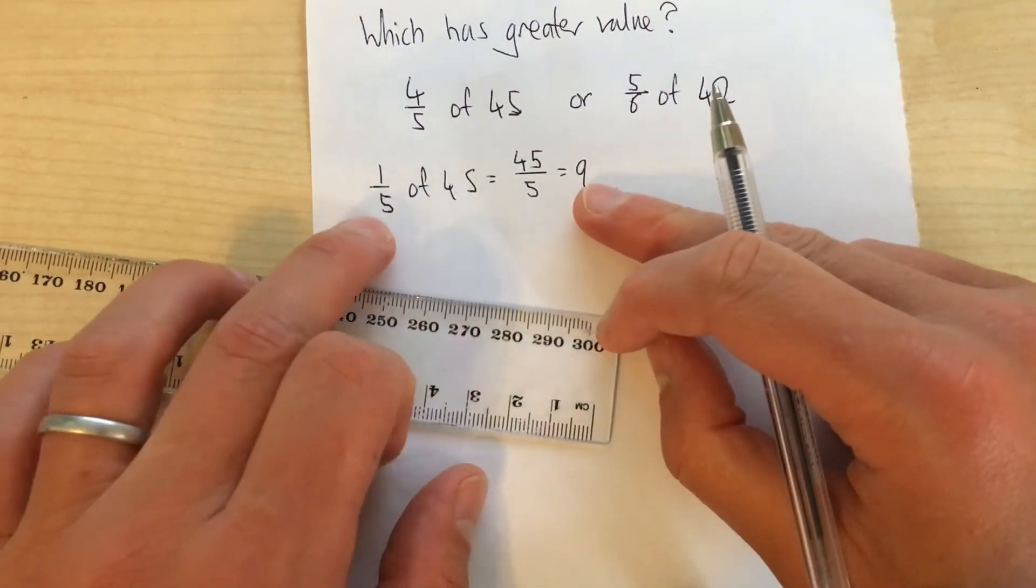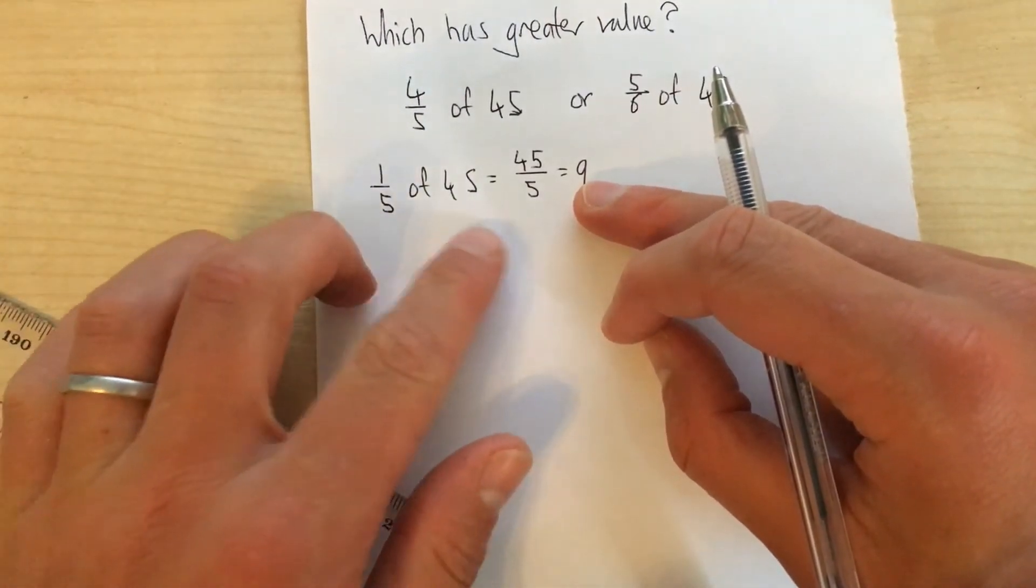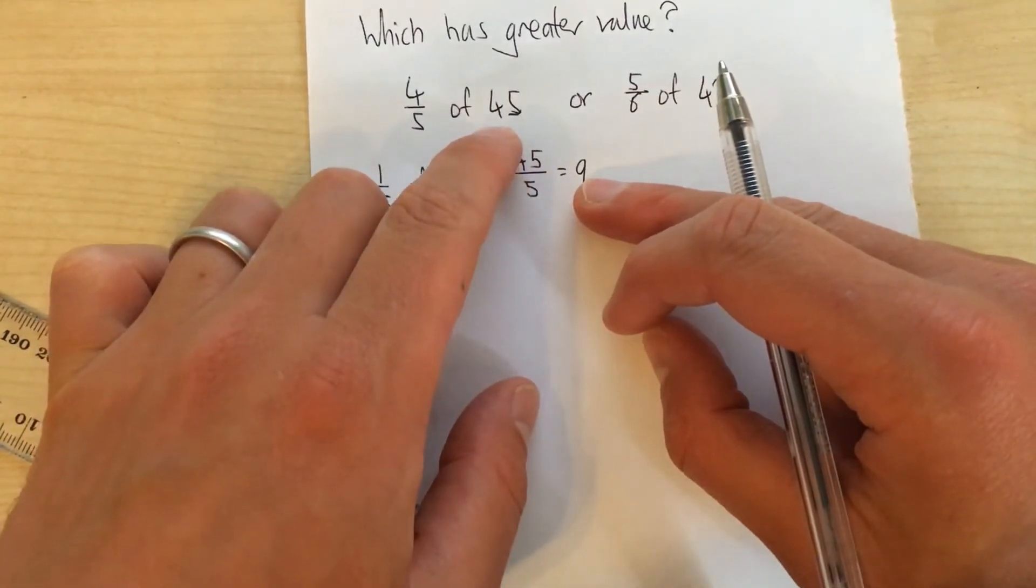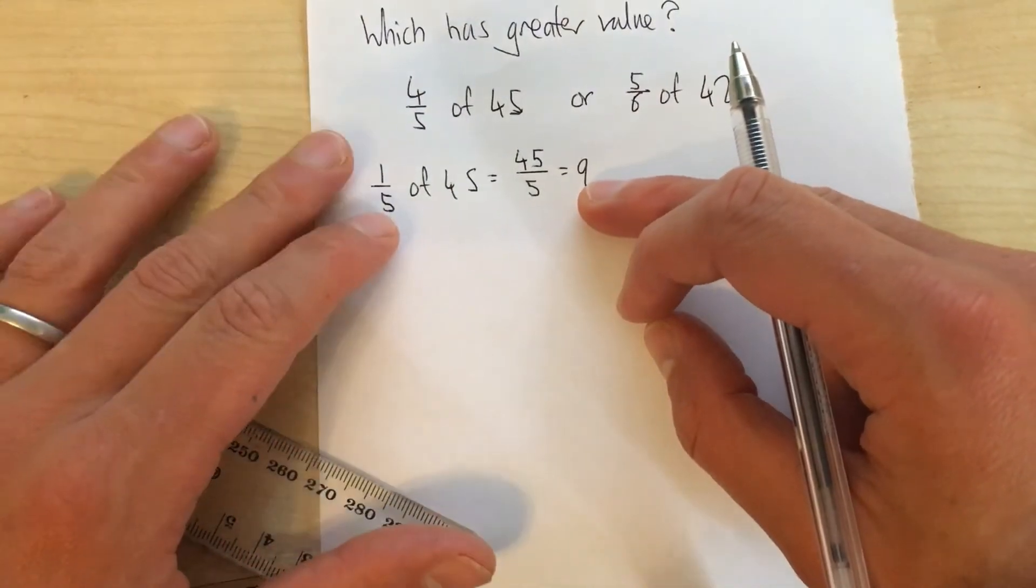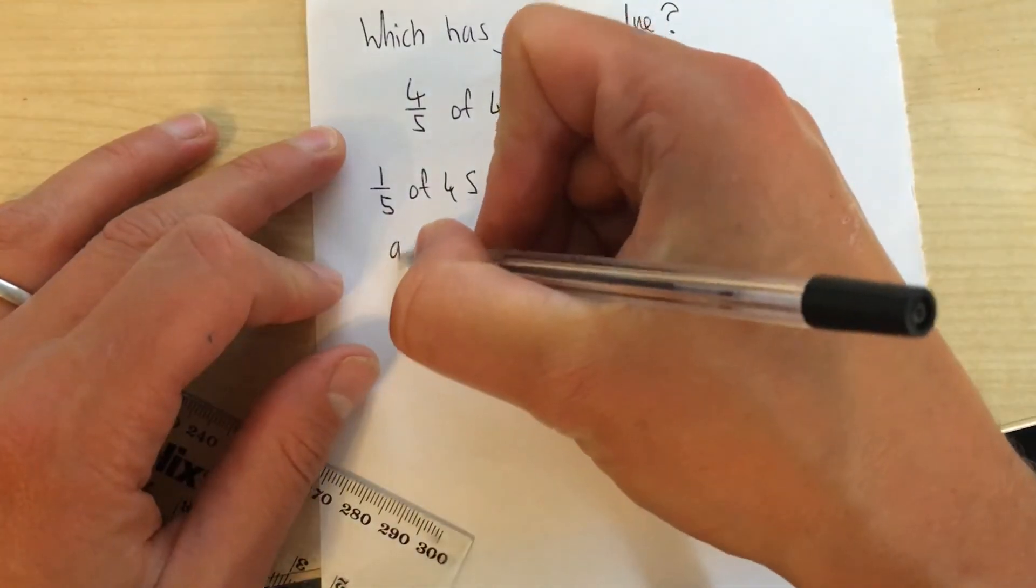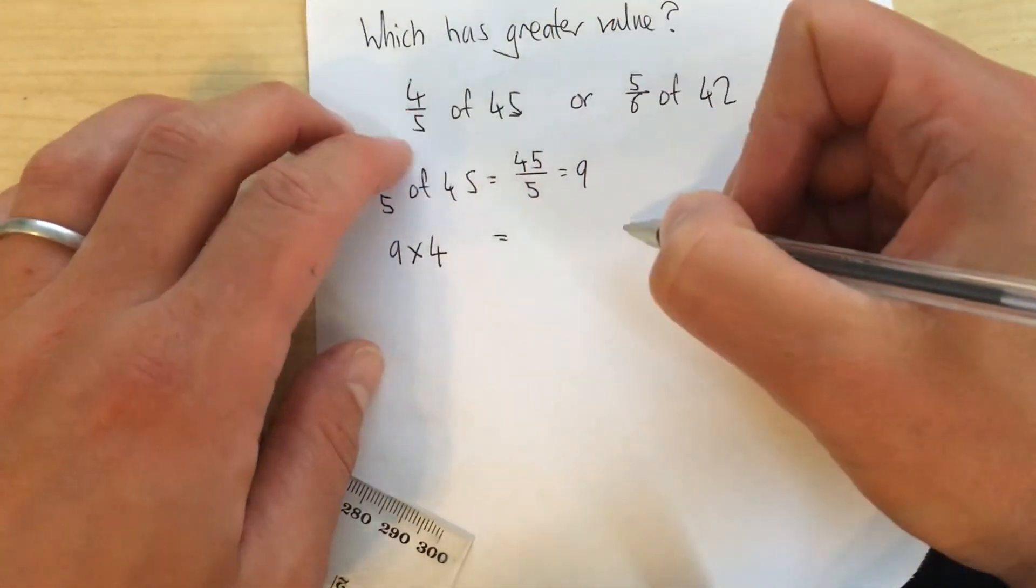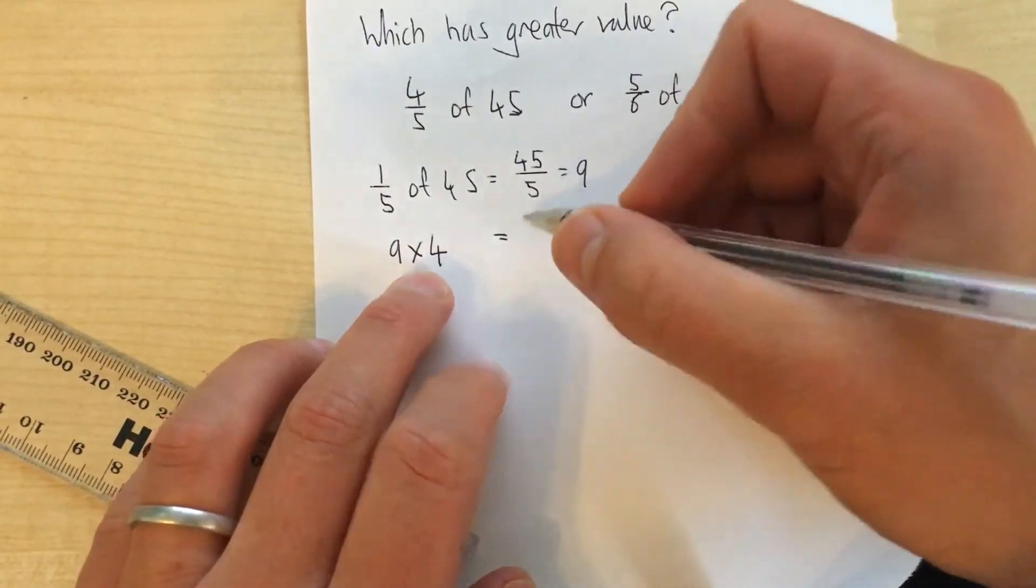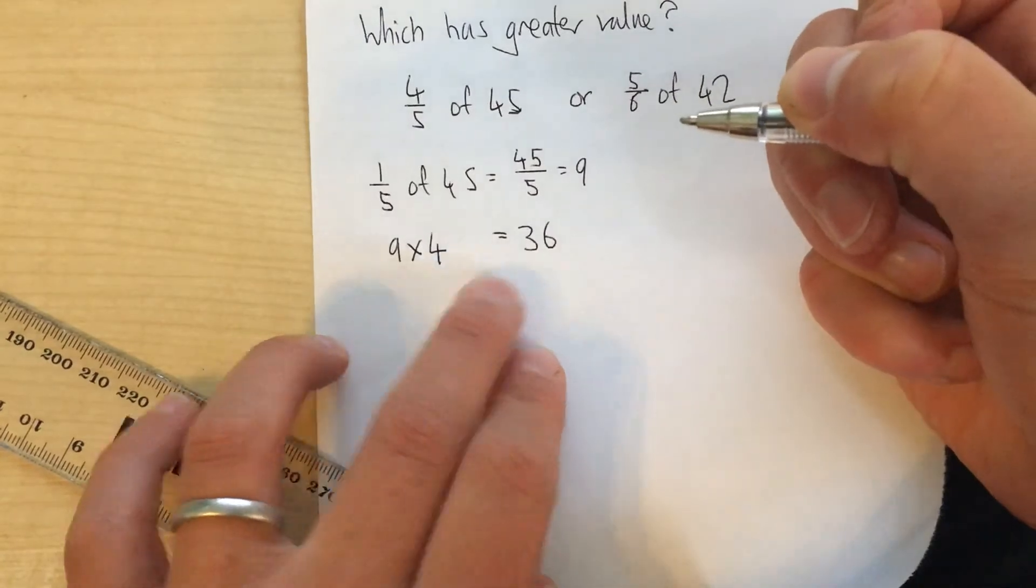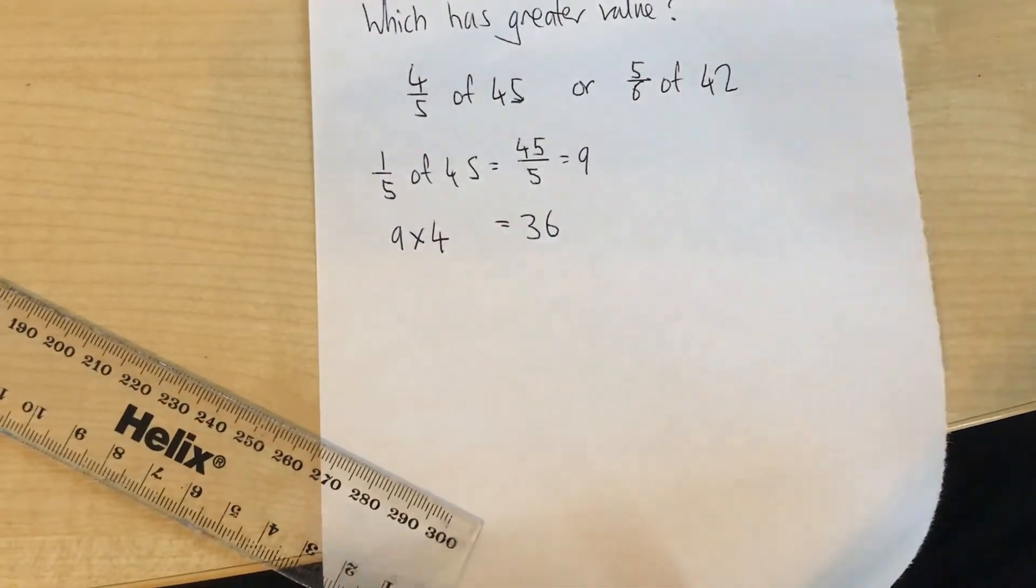This represents 1 fifth of 45. But I want 4 fifths. Well, I could take 9 away from 45. That would work. Or if I stick with the method that I've been using, I take 1 fifth and I multiply it by the numerator, which is 4. So 4 fifths of 45 equals 9 multiplied by 4, which is 36. That's one of my answers. I'm going to underline that to make it clear where my answer is.